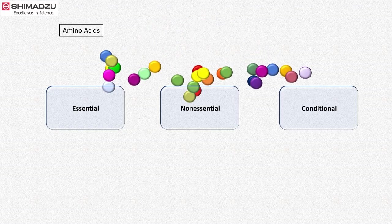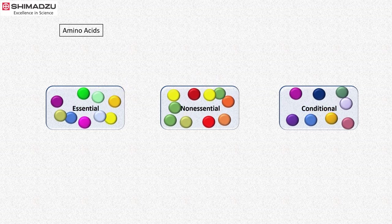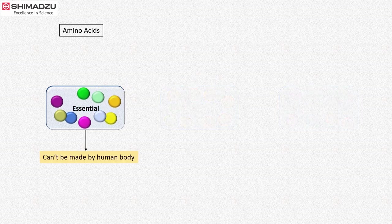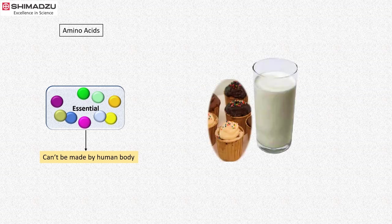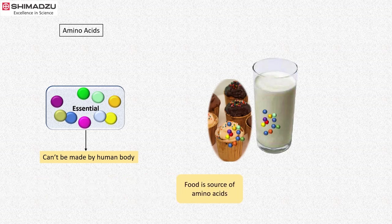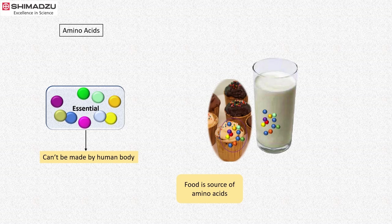They are classified into three groups: essential, non-essential, and conditional. Essential amino acids can't be made by our body and must be obtained through our diet. Therefore, food is the source of amino acids. Apart from the nutritional value, some amino acids also contribute to the taste of food.